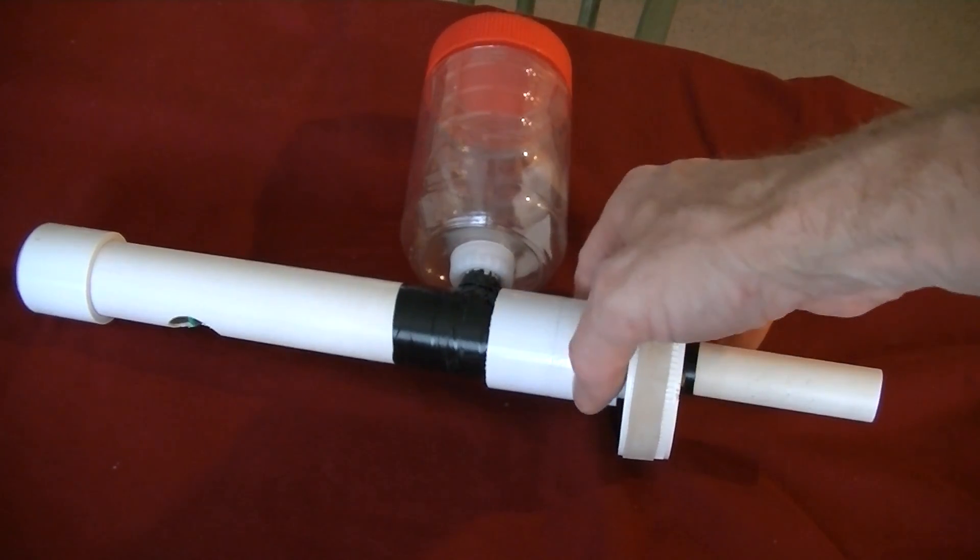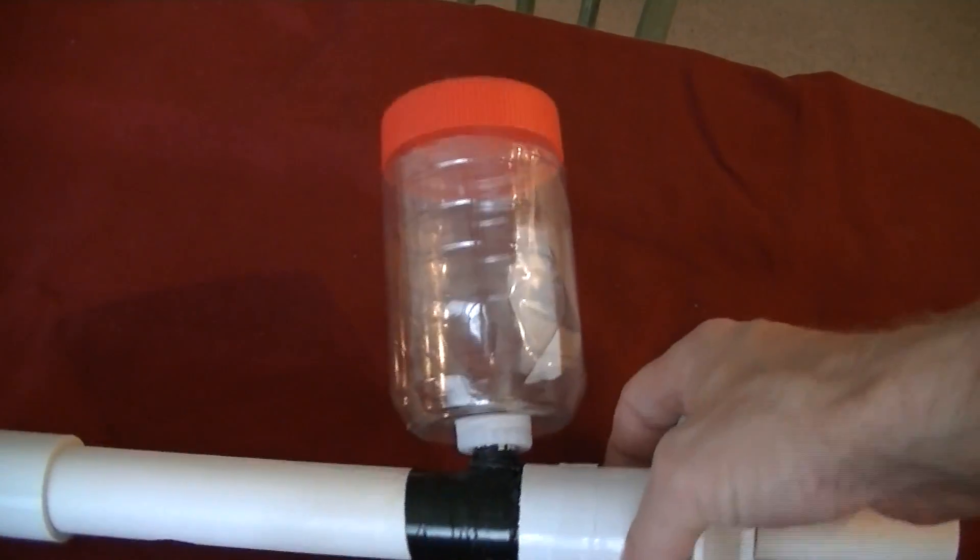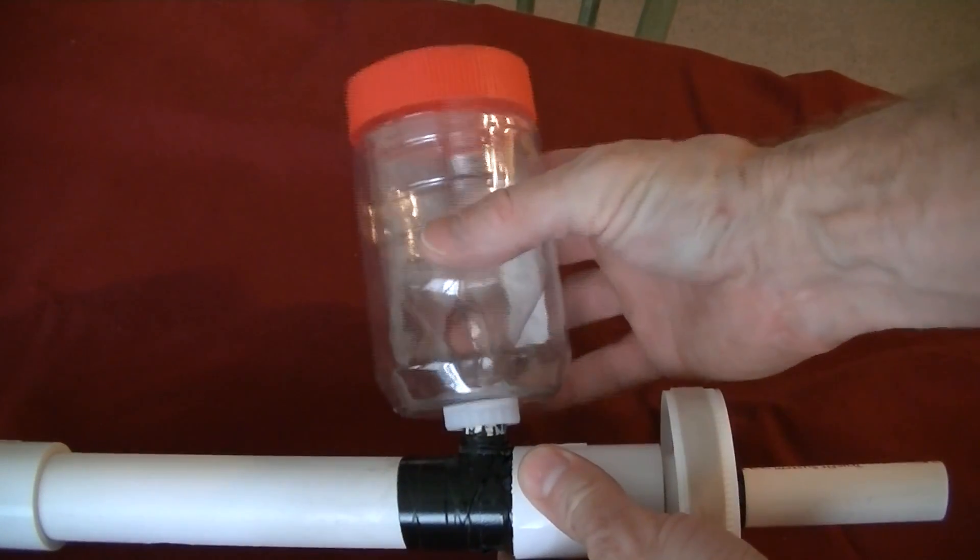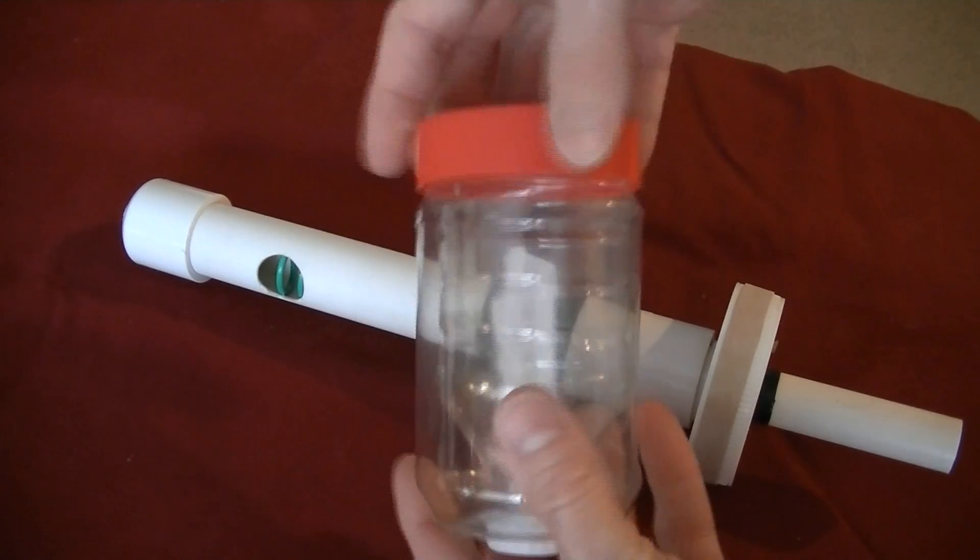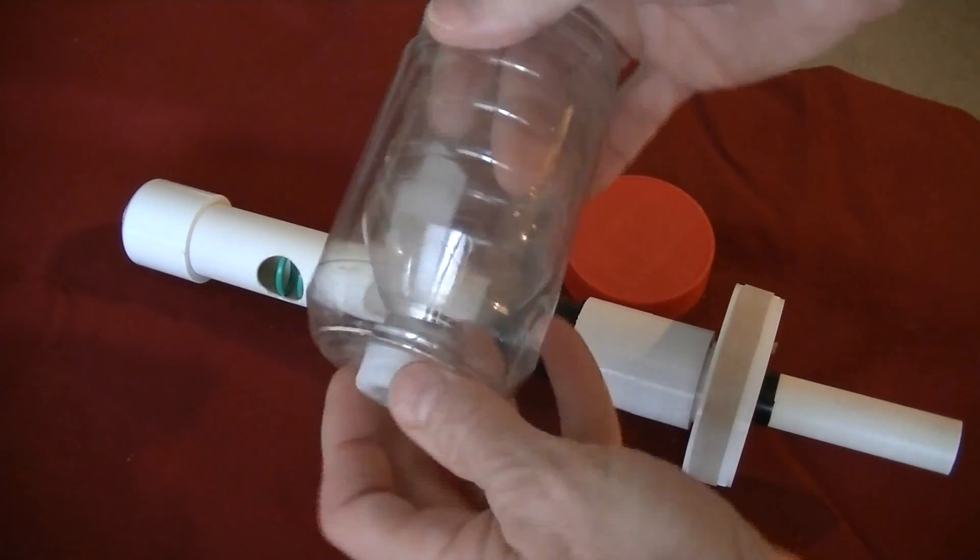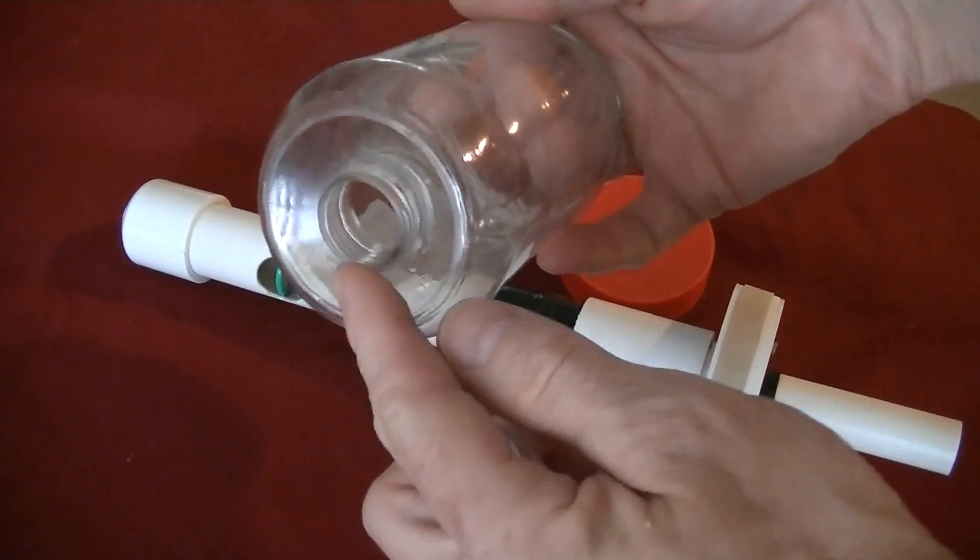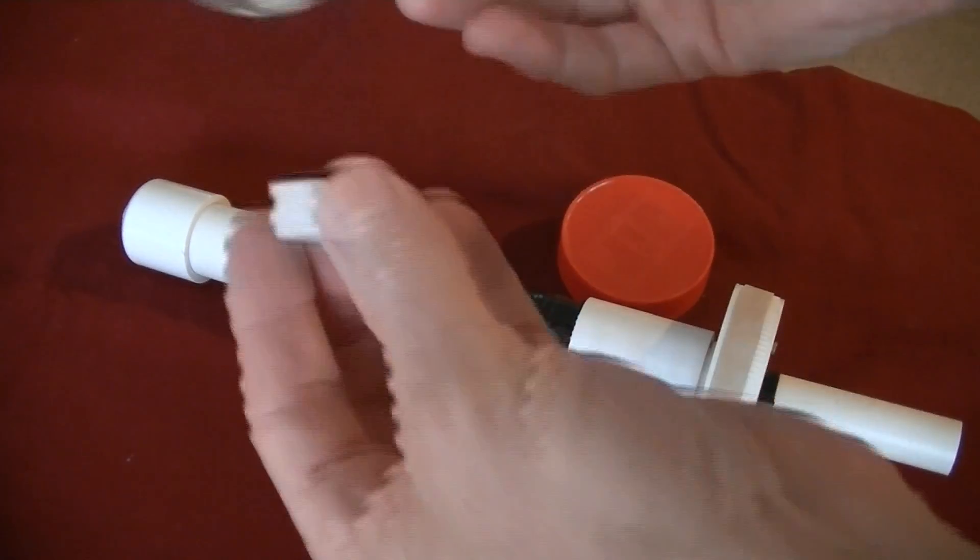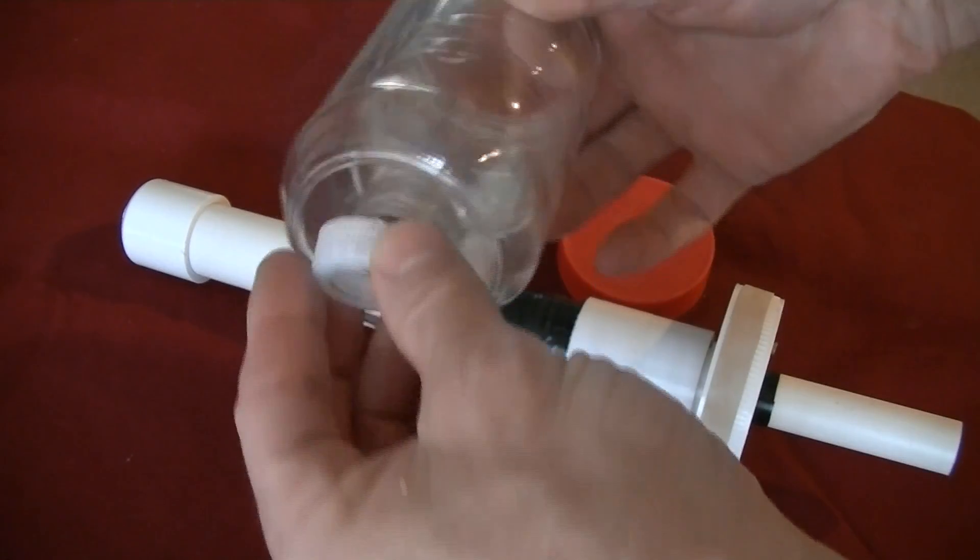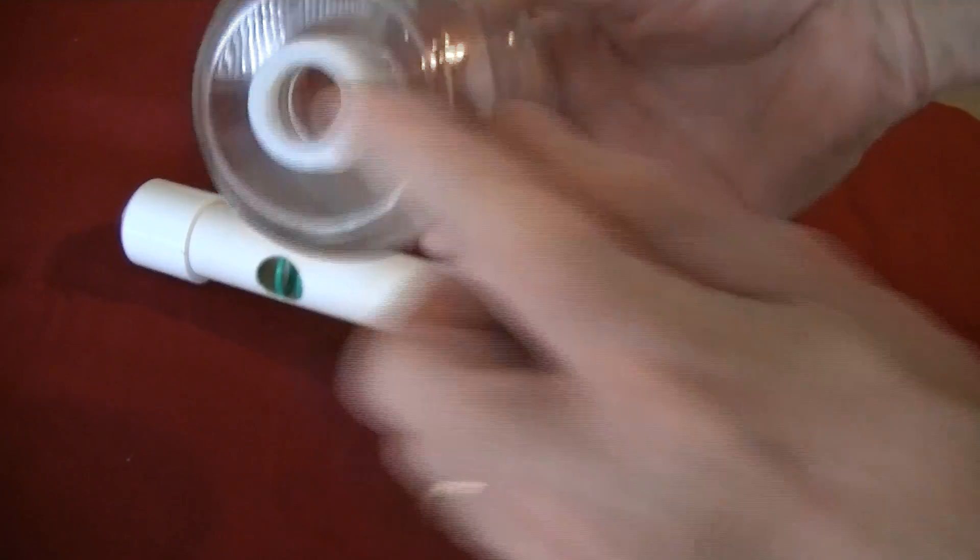This is using scrap stuff I had in the shop. It's an old peanut butter jar. Inside here is a water bottle that makes a funnel shape which is nice. I drilled a hole in the bottom and then put the cap on and drilled a hole in the cap.